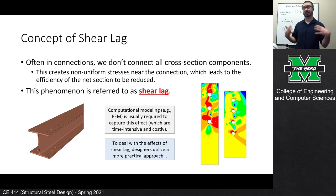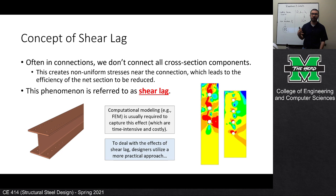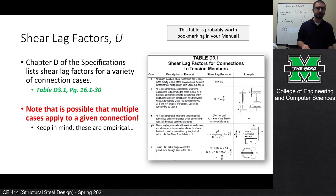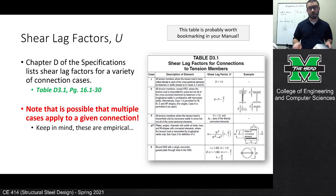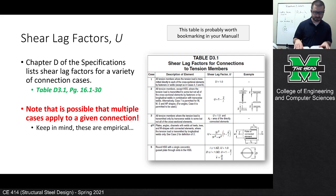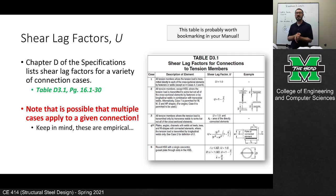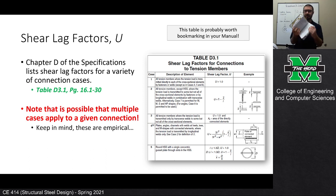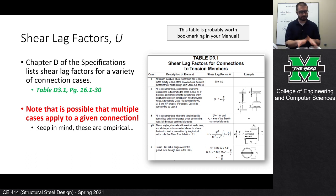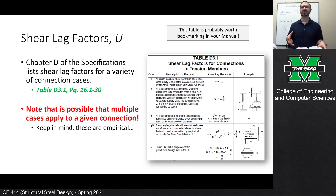That's where empirical expressions come in — and where the value of researchers comes in. We run models and do testing so we can come up with simple practical expressions for designers to utilize. Turn to page 16.1-30 in your manual. You should see Table D3.1: Shear Lag Factors for Connections to Tension Members. This table is worth tabbing or bookmarking — I just put a 'U' on the tab in mine. It lists shear lag factors for essentially every connection scenario you'd need.